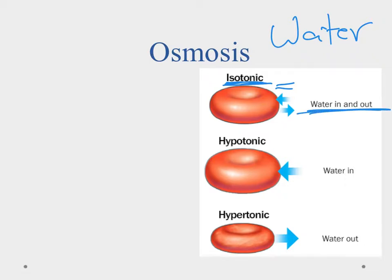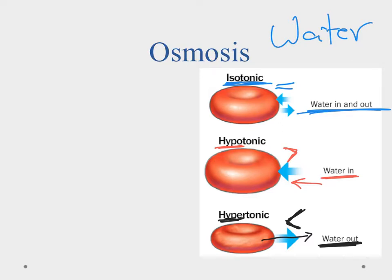A hypotonic solution means the concentration inside the cell is greater than outside, so water rushes into the cell to balance the concentration gradients. If too much water goes in, the cell can expand and eventually explode. The opposite is hypertonic, where the outside has more — like putting a freshwater cell in salt water. Water rushes out of the cell, causing it to shrivel up and die.